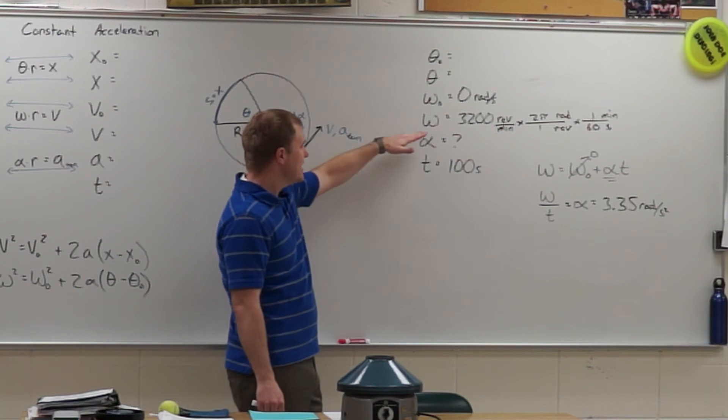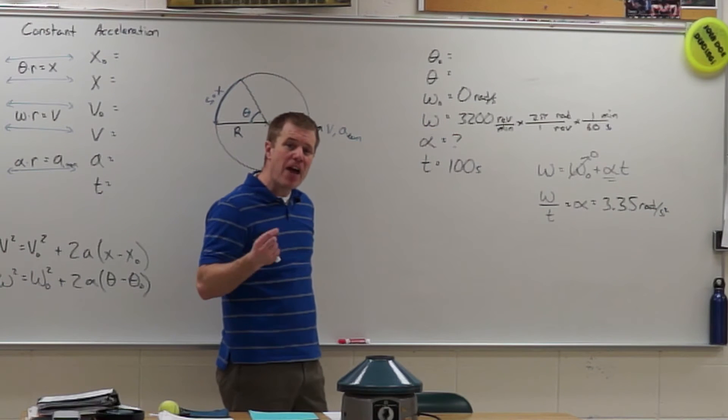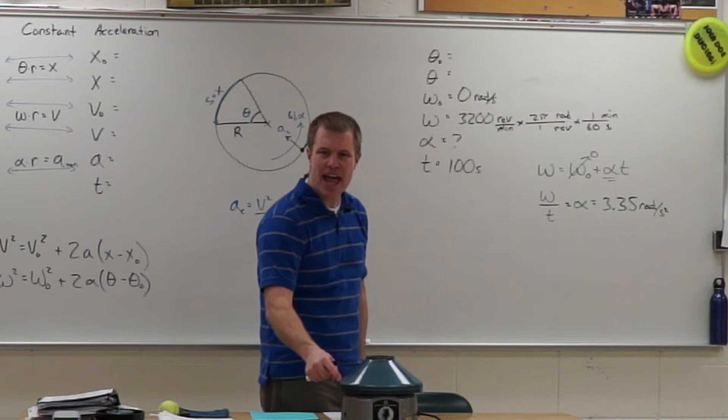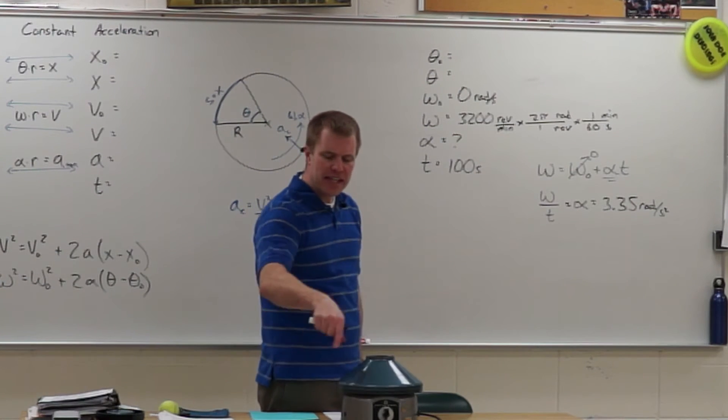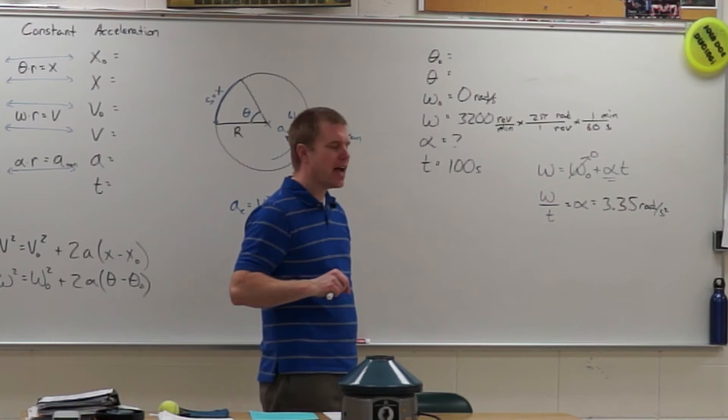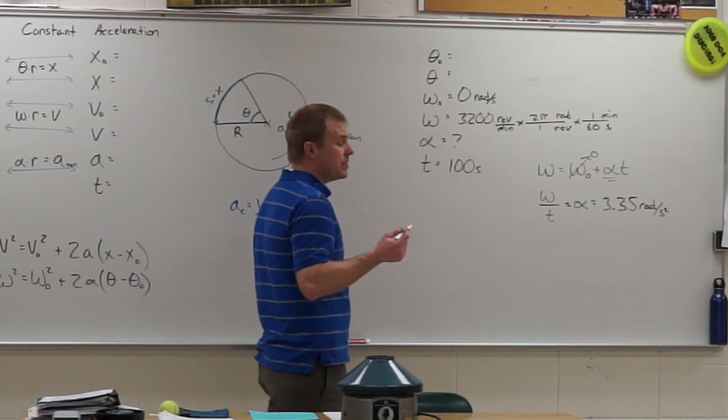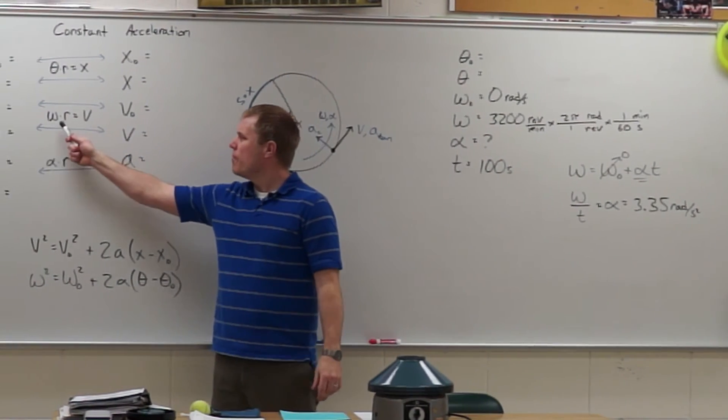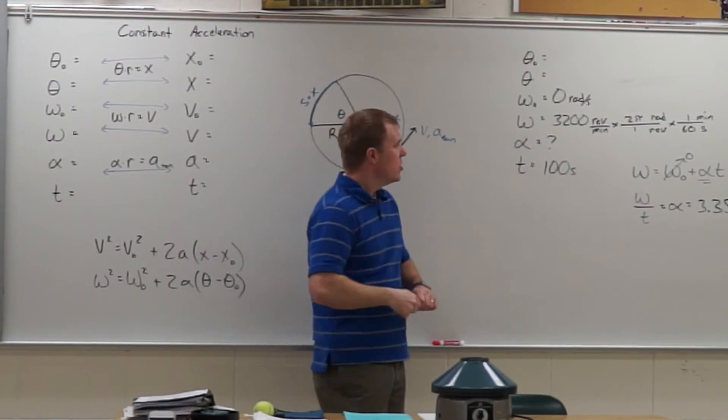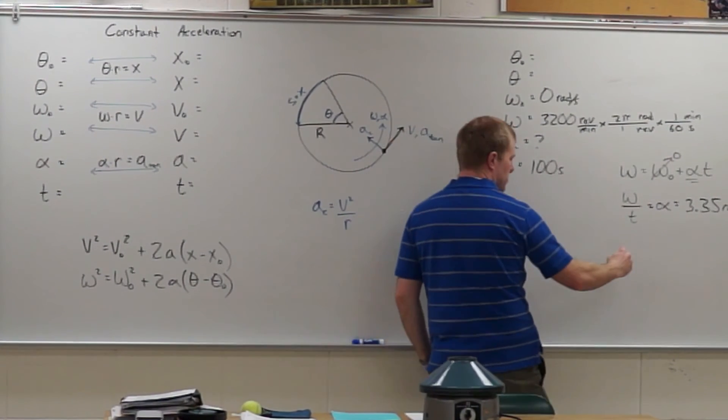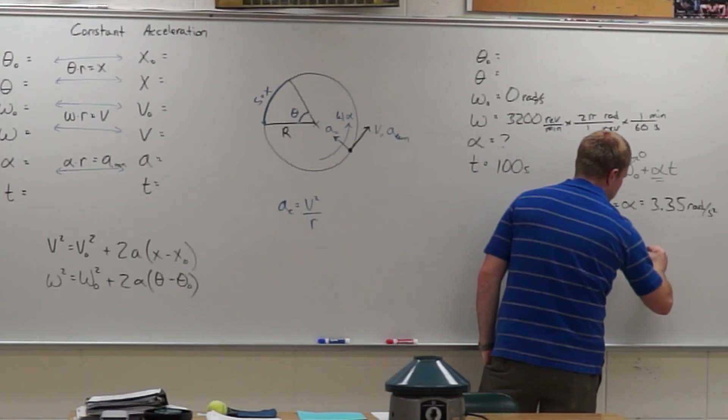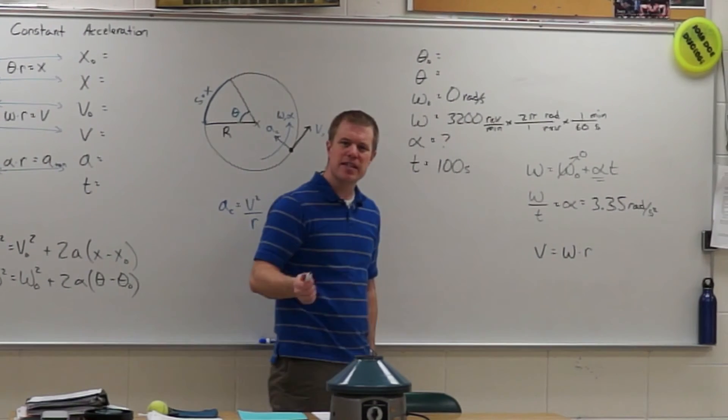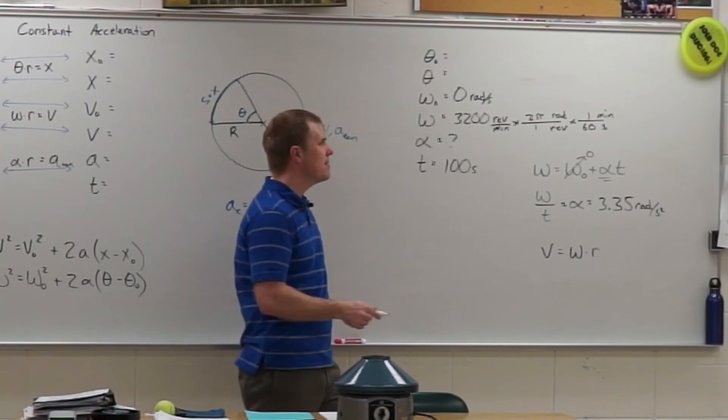Now, once it gets to this omega, how fast is that point at the outside edge moving? So what is the linear speed of a point on the outside edge? Which, okay. Well, to find linear speed, I'm going to have to do omega times r. So I'm going to have to take this omega to find linear speed. And I'm going to have to multiply it by the radius. And what did we say the radius was? 13 centimeters.